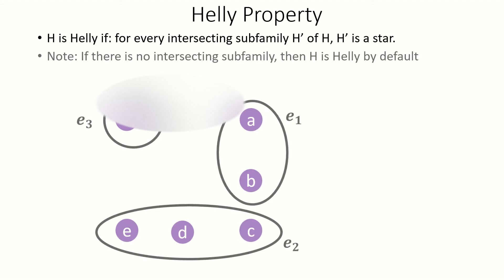Note that if our hypergraph has no intersecting subfamilies, which can only occur if all edges are disjoint, then our hypergraph is heli by default.